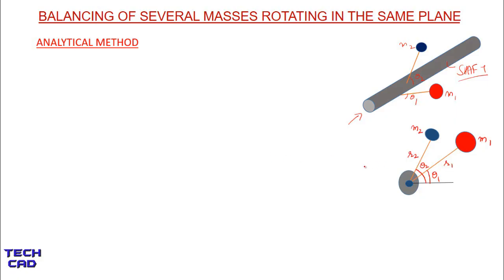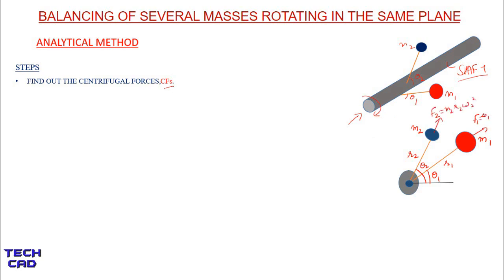Now let's see the steps of the analytical method. Step 1 is to find out the centrifugal forces. Whenever the shaft is rotating clockwise or anticlockwise, these masses will produce centrifugal forces — F1 and F2. Since omega is constant, because whatever the angular velocity of the shaft that is the angular velocity of these masses, we can neglect the angular velocities in the centrifugal forces.